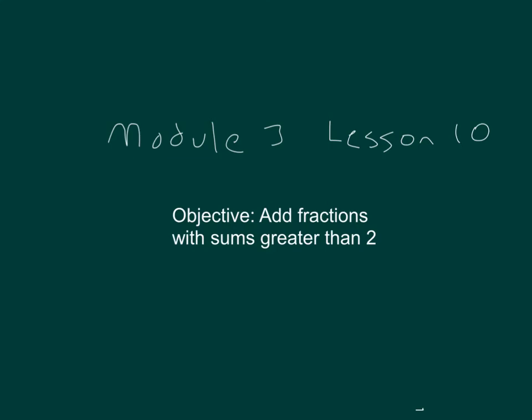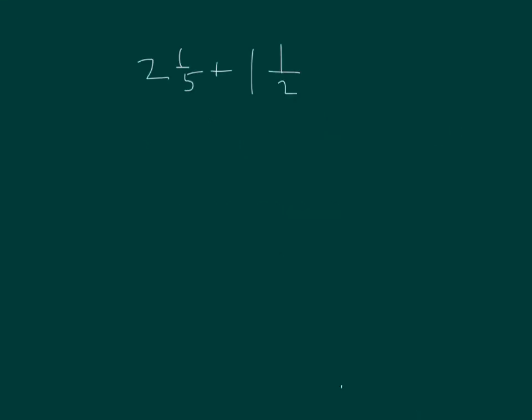The objective is to add fractions with sums greater than 2. Here I have 2 and 1 fifth plus 1 and 1 half.